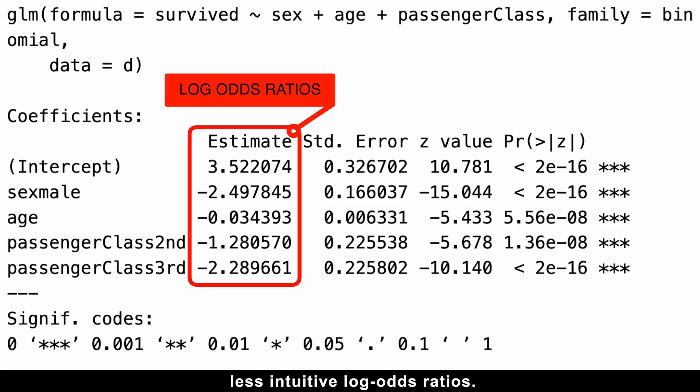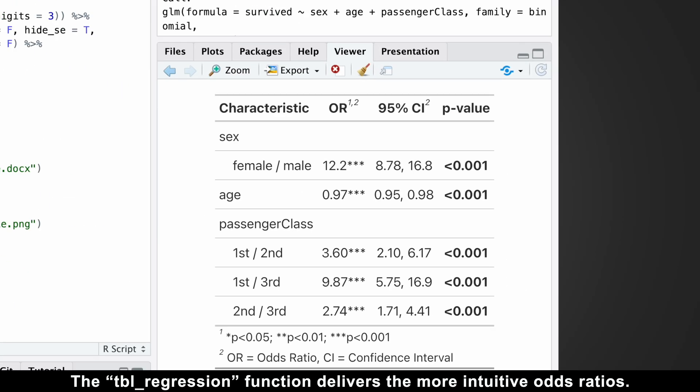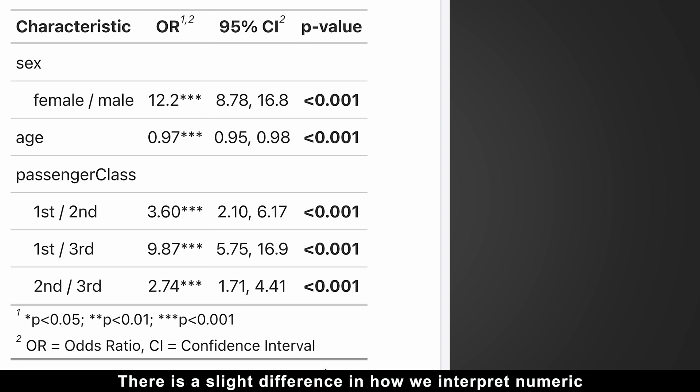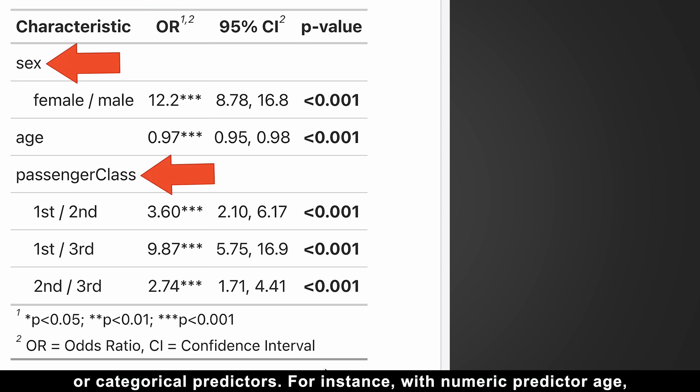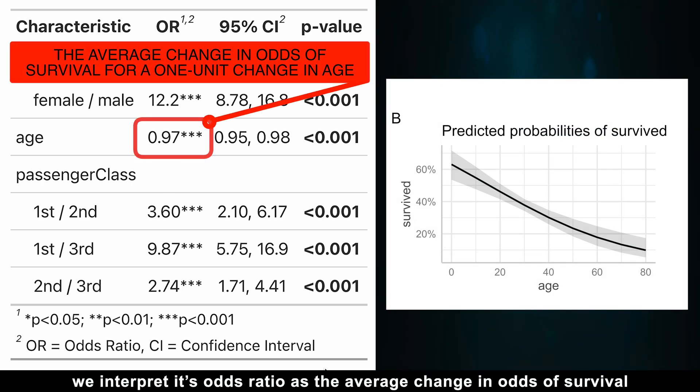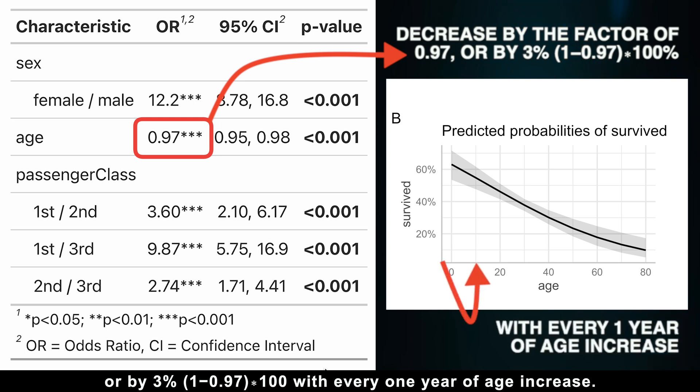The tbl_regression function delivers the more intuitive odds ratios. There's a slight difference in how we interpret numeric or categorical predictors. For instance, with the numeric predictor age, we interpret its odds ratio as the average change in odds of survival for a one-unit change in age, while holding other predictors fixed. Particularly, the odds of survival decrease by a factor of 0.97, or by 3%, with every one year of age increase.